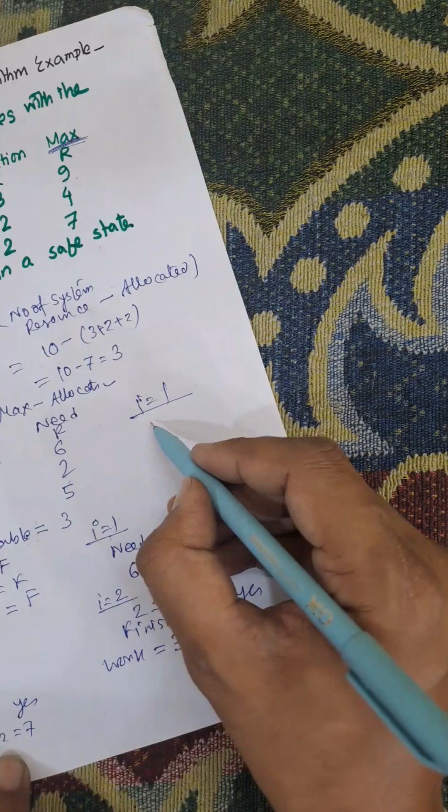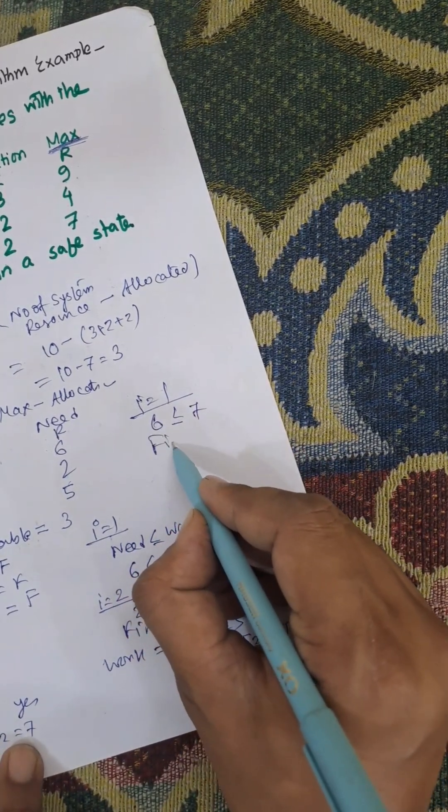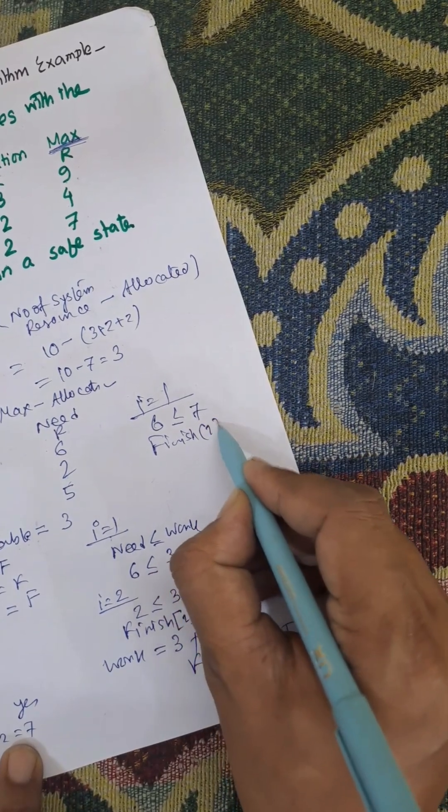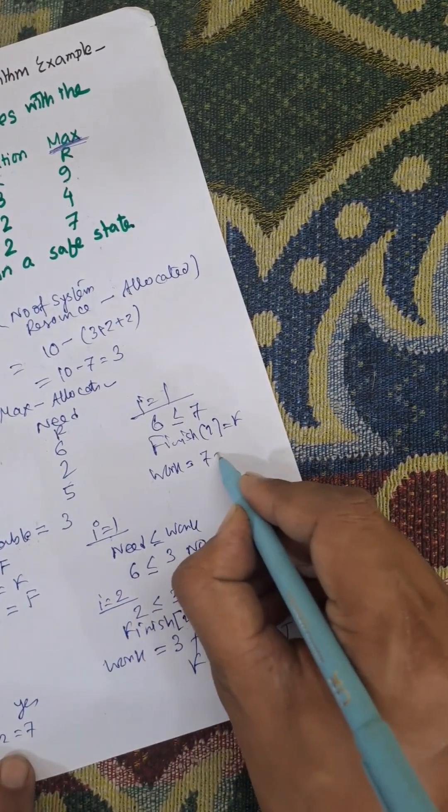Now work need is here is 6, work is 7, and it's okay. Finish is false. Yes, finish 1 is false. So work equals work plus allocation, 7 plus 3, 10.